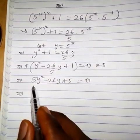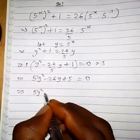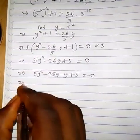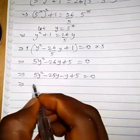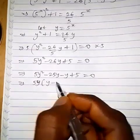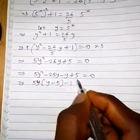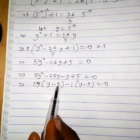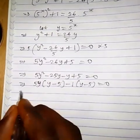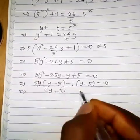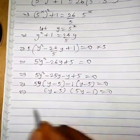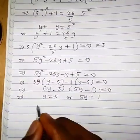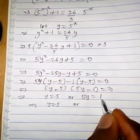Now we factorize this. When we factorize, we obtain 5y squared minus 25y minus y plus 5 equals 0. Collecting like terms: 5y is common, so we have 5y times (y minus 5) minus 1 times (y minus 5) equals 0, because 5y times y is 5y squared and 5y times minus 5 is minus 25y. This gives us (y minus 5)(5y minus 1) equals 0.